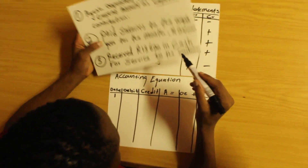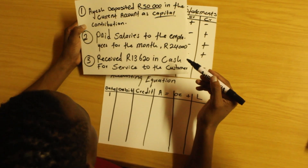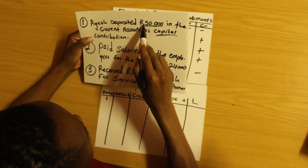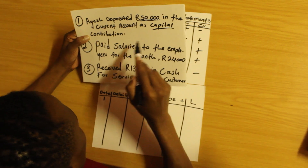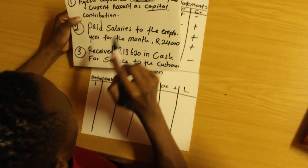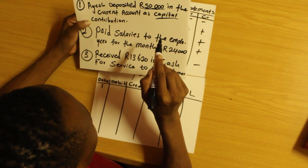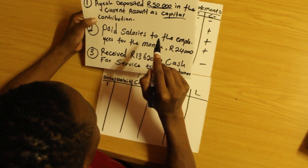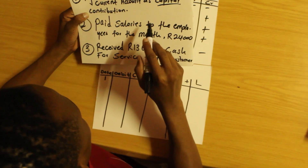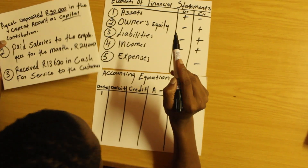Greetings everyone. I want to continue from the previous introduction of the accounting equation. I'm going to do three transactions. The first transaction says she deposited 50,000 in the current account as a capital contribution. So we have two accounts here: bank and capital. Let me show you how to record this transaction.